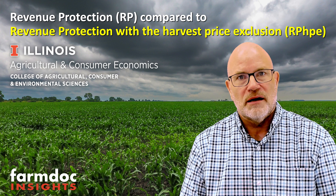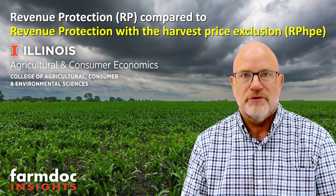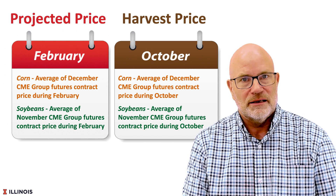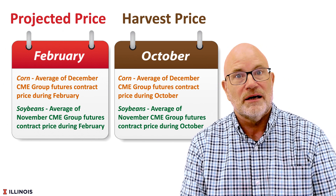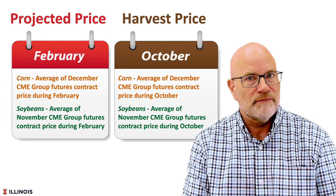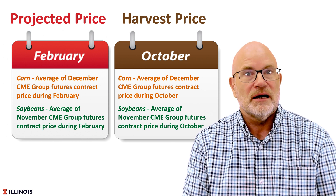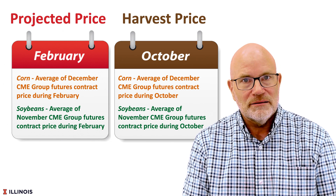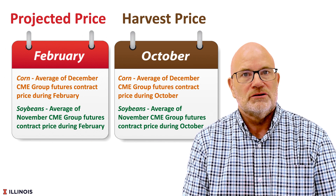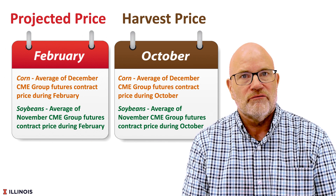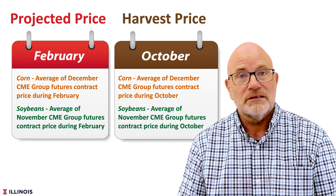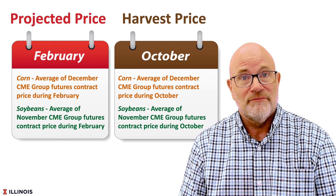We often get interest in RPHPE when we are in a high premium cost environment. RP and RPHPE use two prices in setting guarantees and revenue to count against those guarantees. The projected price is the average of settlement prices during the month of February, CME December contract for corn, and that sets the guarantee. Then we use the October price, which is the average of settlement prices during October on that same December contract for corn, and that sets revenue. However, that October price not only sets revenue, but under RP can influence the guarantee.